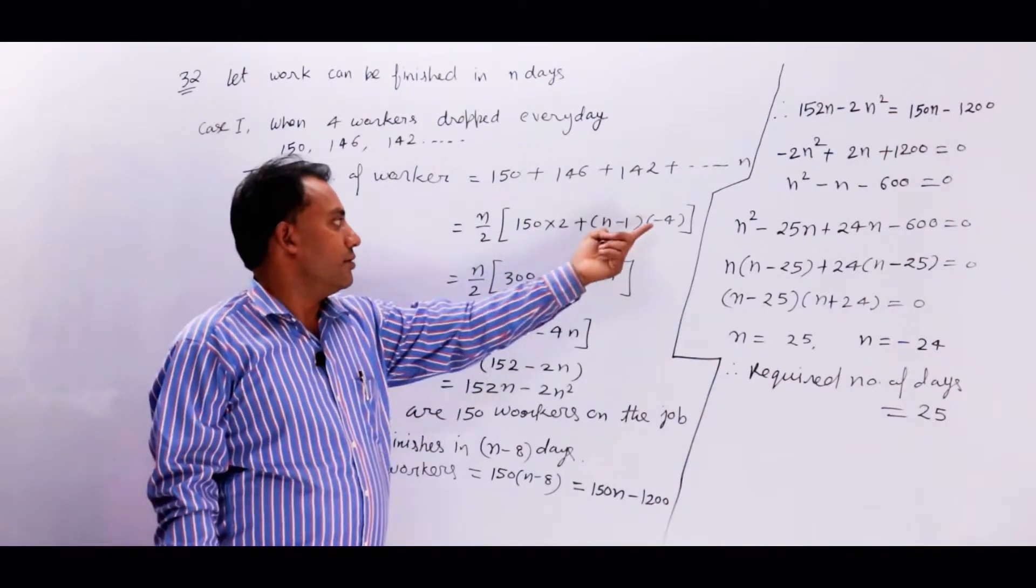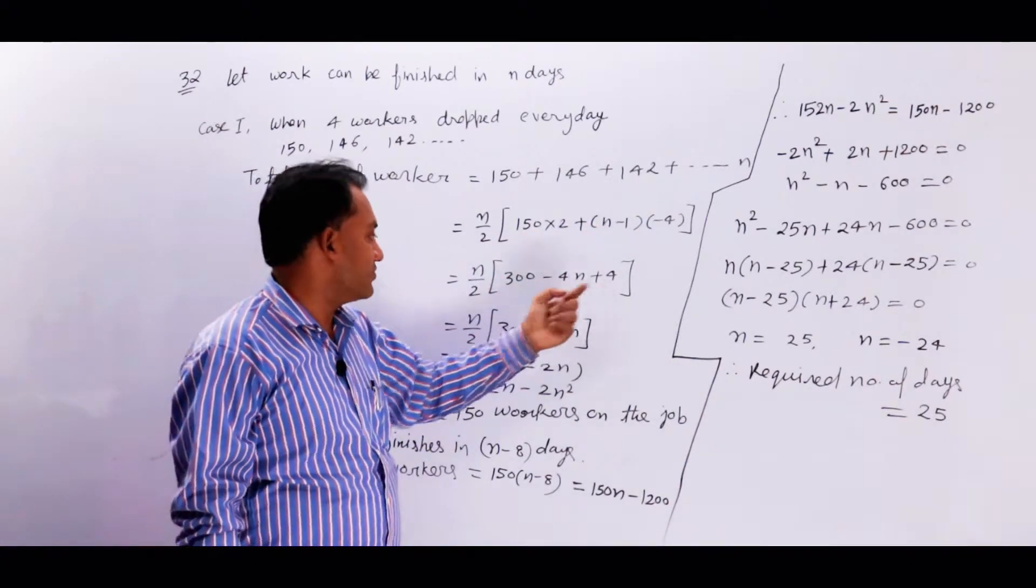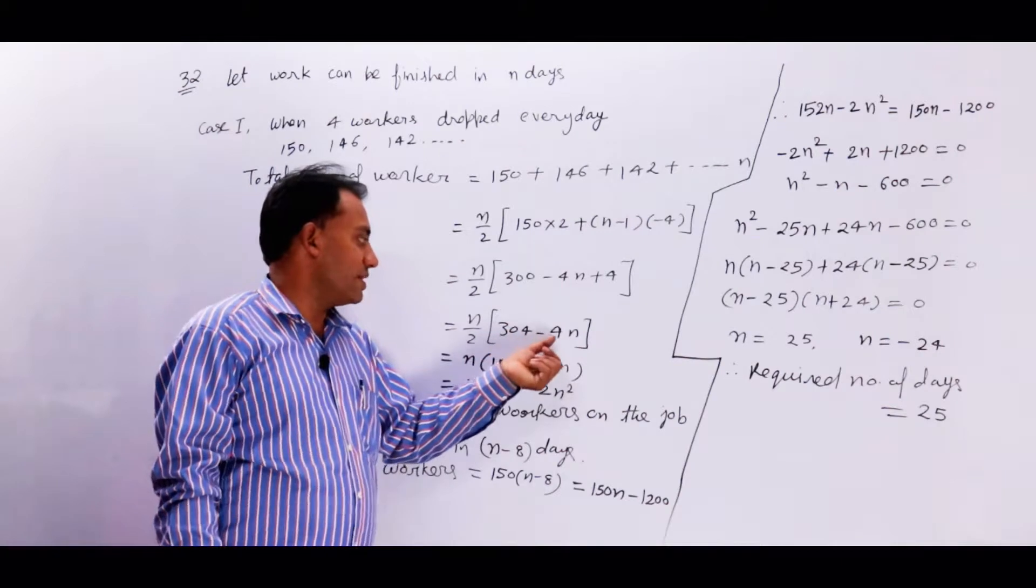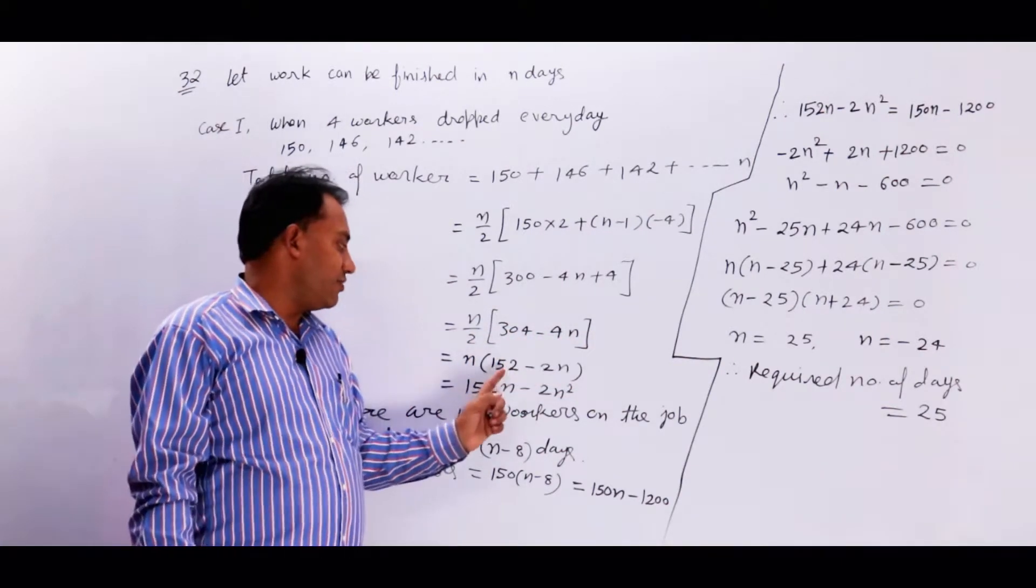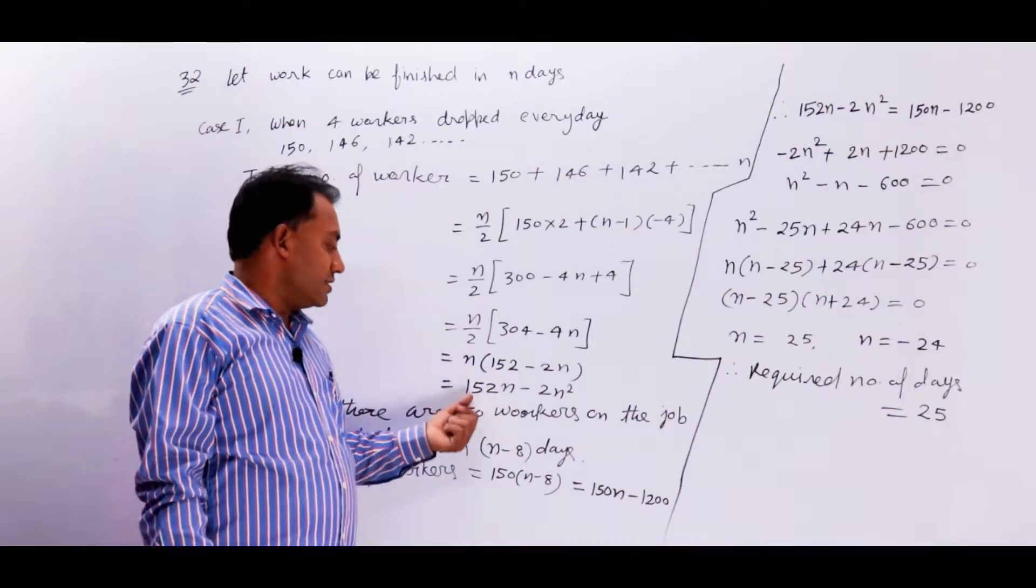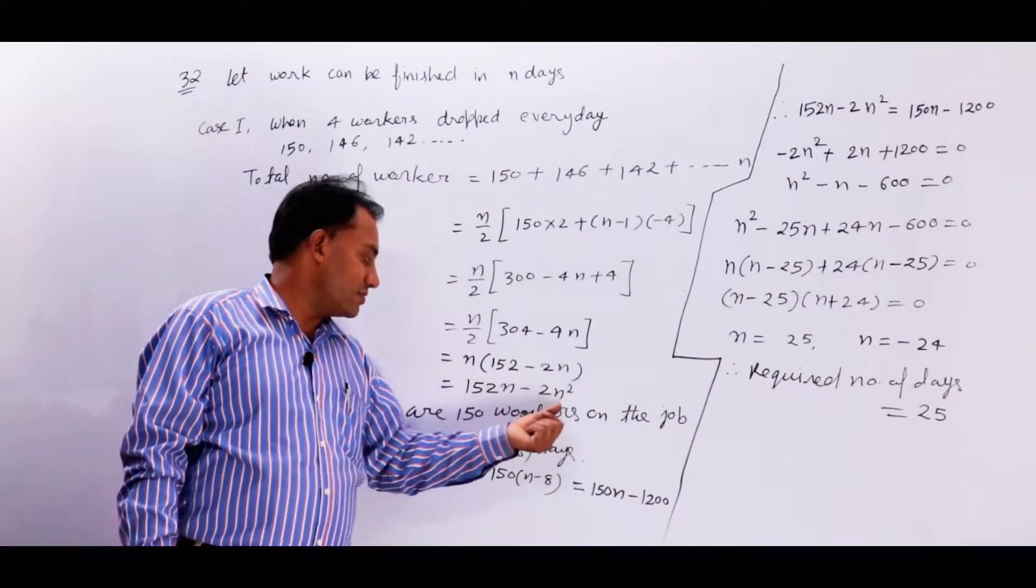Here we have 300 minus 4, so we apply it to this. So this is minus 4n plus 4, n upon 2, 304 minus 4. This 2 is divided. So this is 150 minus 2n, and is equal to 150n minus 2n square.